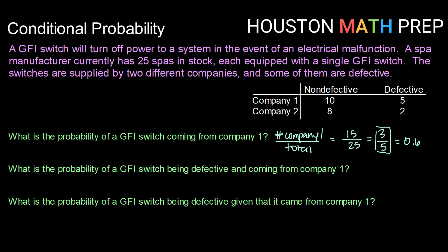Okay, so looking at the next one, what is the probability of a GFI switch being defective and coming from company 1? So this would be the number of defective from company 1 over the total number that we have. So looking at our table, the number that are defective and came from company 1 are 5, and then the total number of GFI switches that we have is 25. So reducing 5 out of 25, we get 1 fifth or 0.2. So the number of defective company 1 switches that we have in total, 20%.